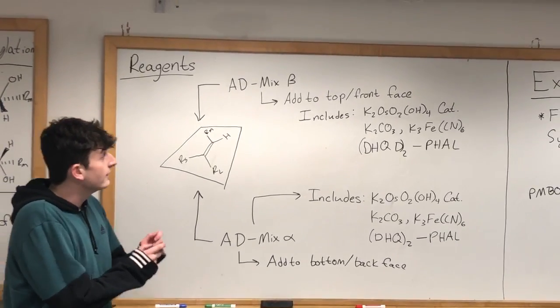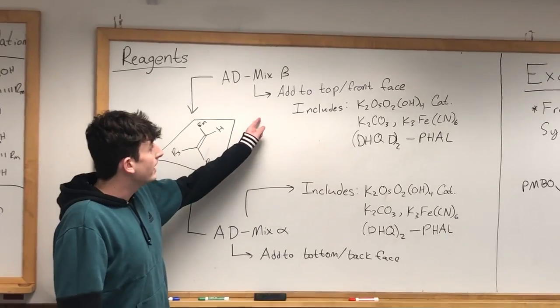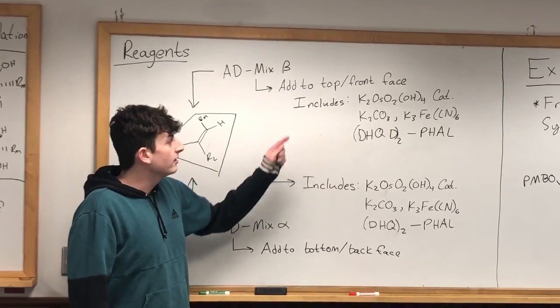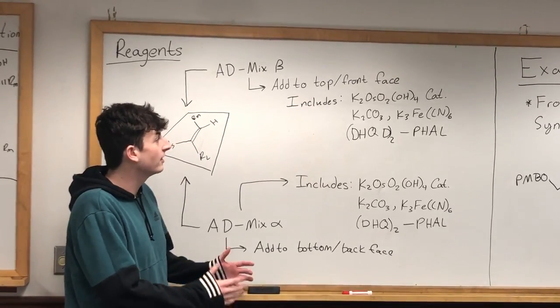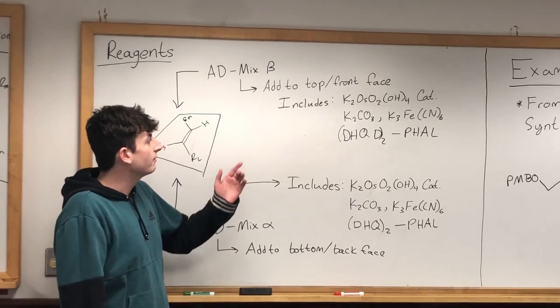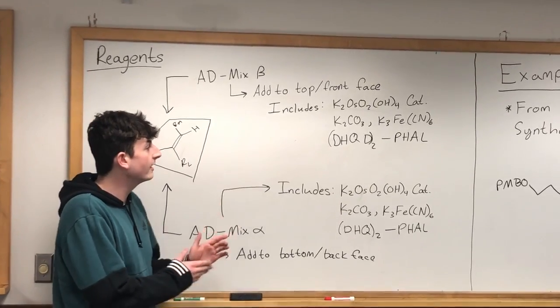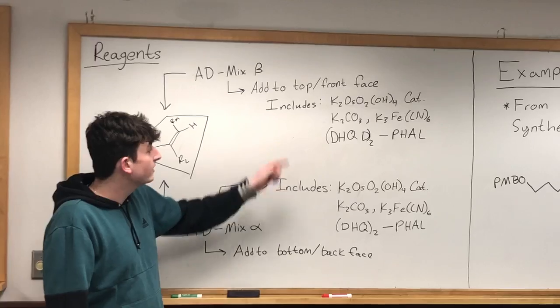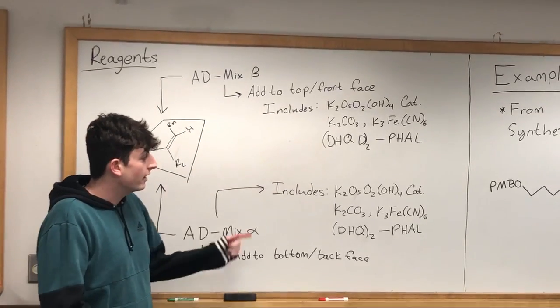The reagents included in AD mix beta are: potassium osmium tetroxide, potassium carbonate, potassium ferrocyanide, and the chiral quinine ligand DHQ-2-PHAL.